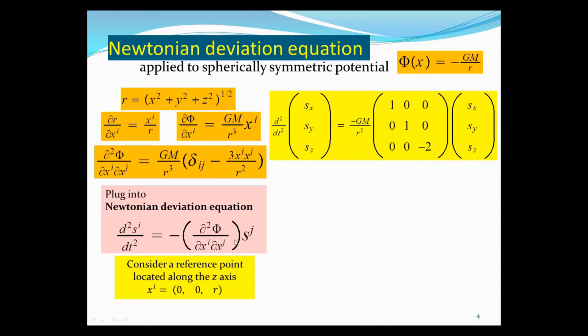So now we plug this expression of the second derivative into the deviation equation. Okay. And this you can work out. Now let's take x to be in the z direction. So therefore there's no x component, y component. The z component is simply given by r. And then this matrix, so this is GM over r cubed. Okay. And this s. So this minus sign came from here. And this s factors out.